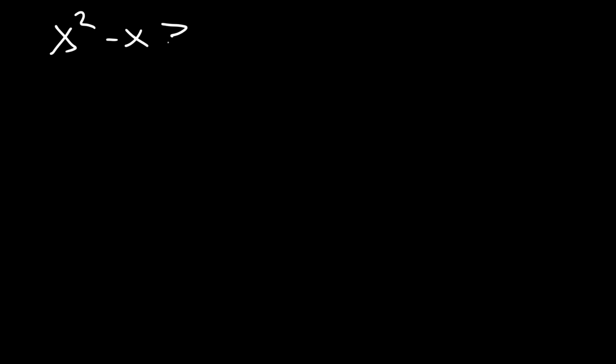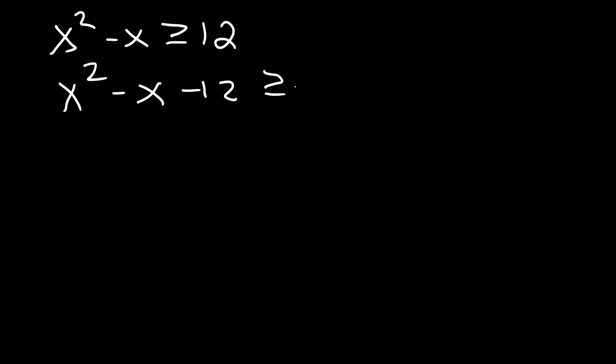Let's say we have x squared minus x is greater than or equal to 12. When dealing with an equation, x is equal to a specific number like 4, 7, negative 2, 0. But when dealing with inequalities, x is equal to a range of answers, so we have to take a different approach. The first thing we need to do is get a 0 on one side of the inequality, so let's subtract both sides by 12: x squared minus x minus 12 is greater than or equal to 0.